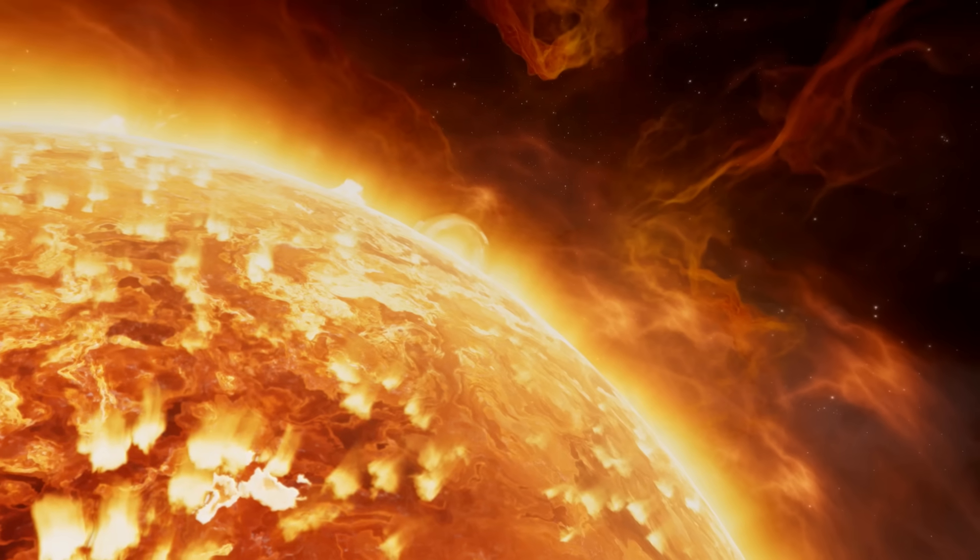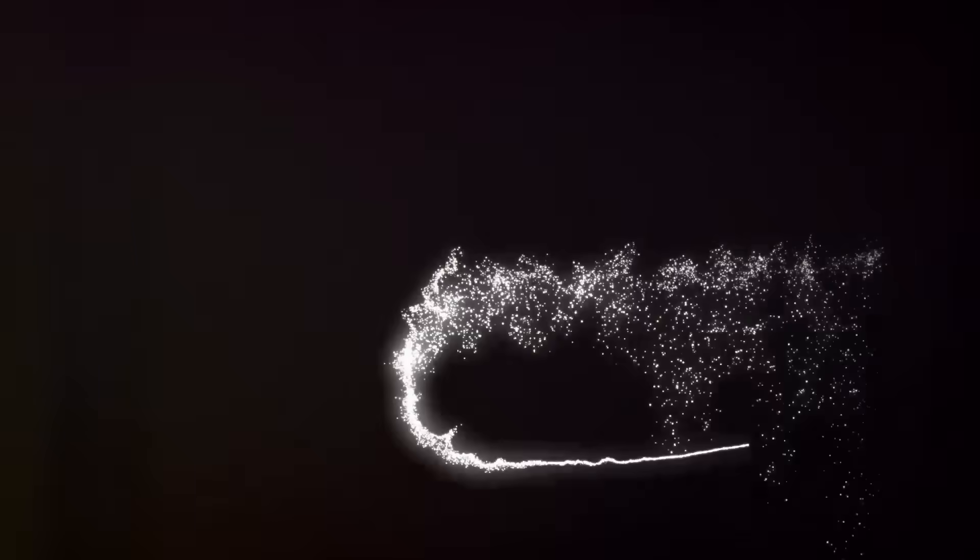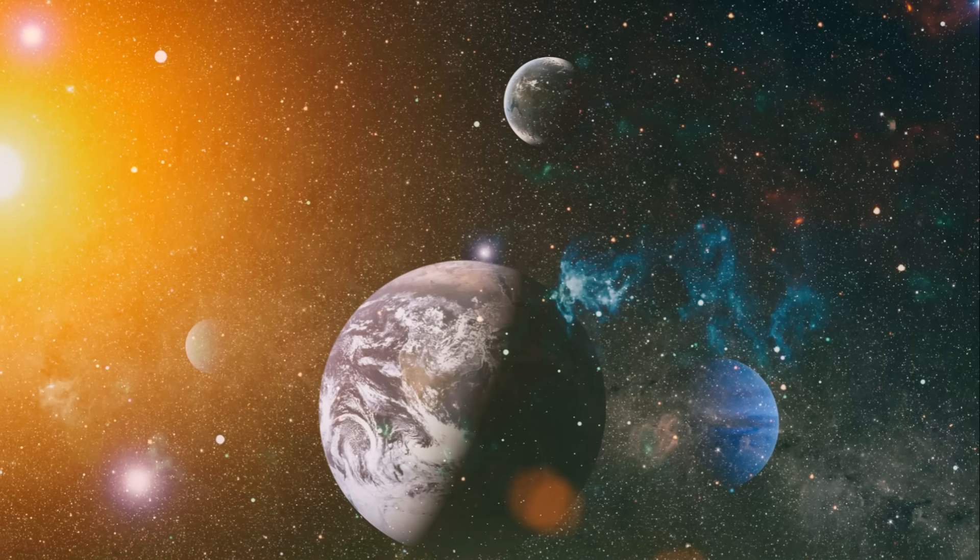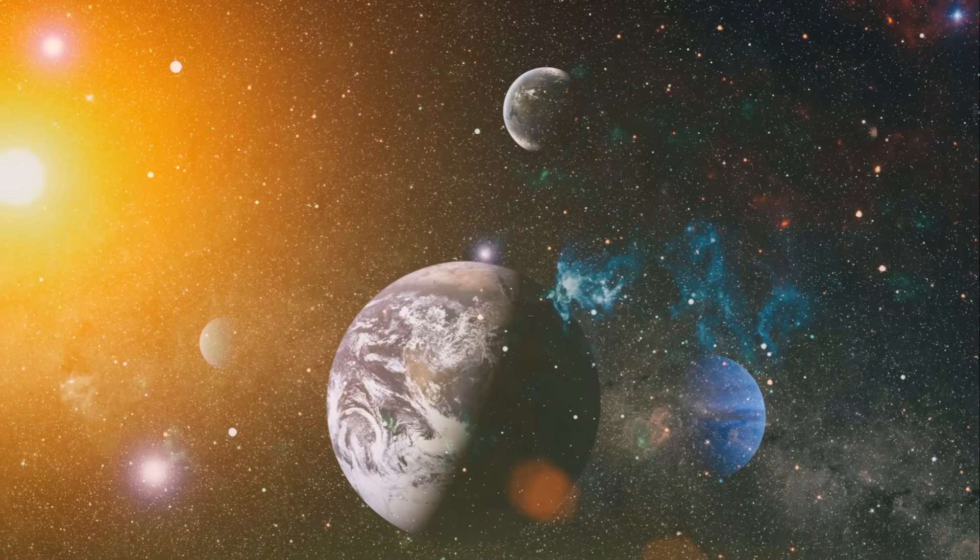Let's take a deeper dive into how the helio tail functions. Consider our sun, it's not sitting idle. Our sun is constantly emitting what we call solar wind, a stream of charged particles that radiates out into space. These particles don't just disperse into the void, they create a sort of bubble around our solar system, this is known as the heliosphere.